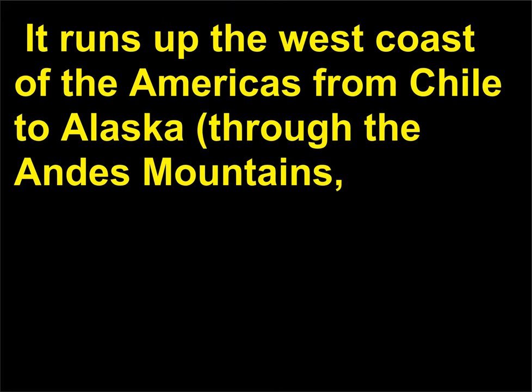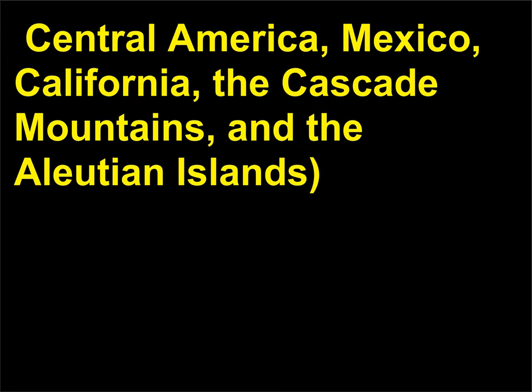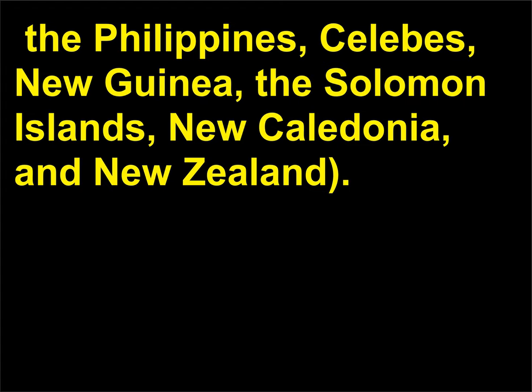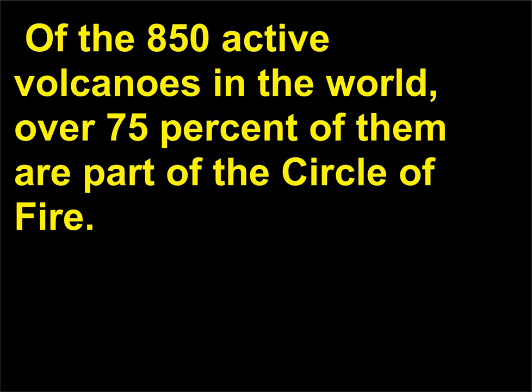It runs up the west coast of the Americas from Chile to Alaska, through the Andes Mountains, Central America, Mexico, California, the Cascade Mountains, and the Aleutian Islands. Then down the east coast of Asia from Siberia to New Zealand, through Kamchatka, the Kuril Islands, Japan, the Philippines, Celebes, New Guinea, the Solomon Islands, New Caledonia, and New Zealand. Of the 850 active volcanoes in the world, over 75% of them are part of the circle of fire.